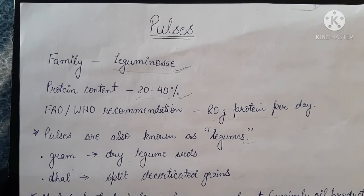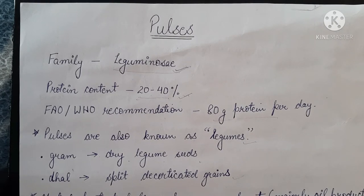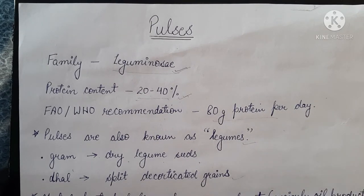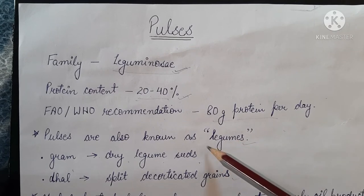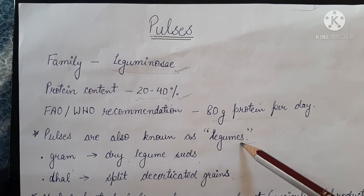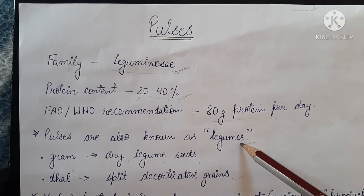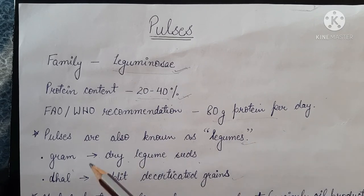According to FAO/WHO recommendations, 80 grams of protein per day is required by a person. Pulses are also known as legumes — an alternate name that is common in many parts of the world. In India, the term 'gram' is commonly used for dry legume seeds with husk.